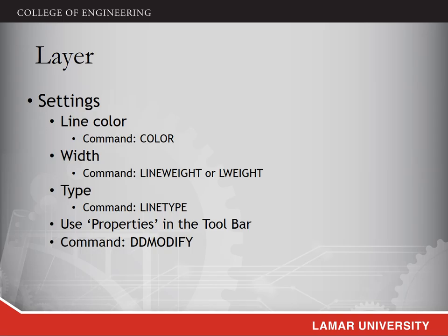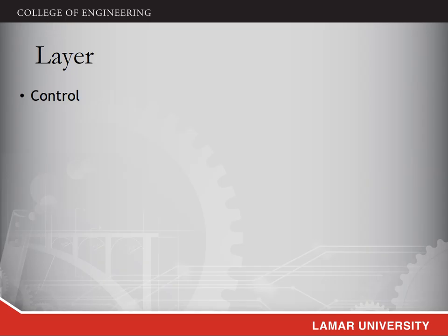For each layer, you can set the properties of the lines added to that layer, including their color, width, and weight. For the color, type the command 'color' to modify it. For the line width, type 'lineweight' or 'lw' to change the values. For the line type, type 'linetype' to modify the values. You can also use the Properties panel in the toolbar or type 'ddmodify' to change all those properties.